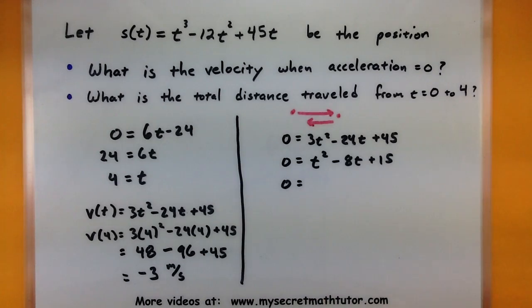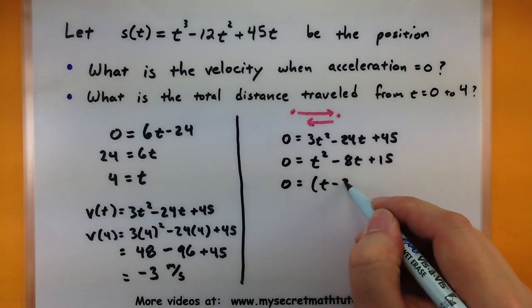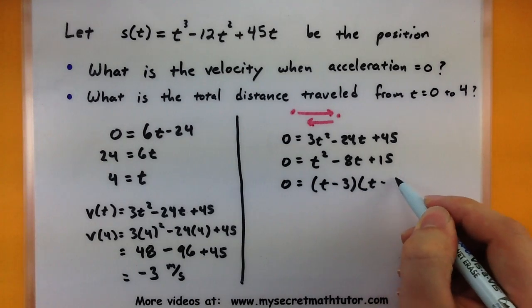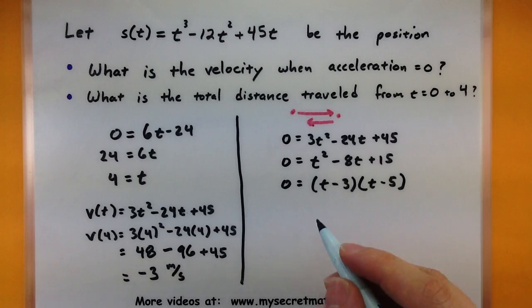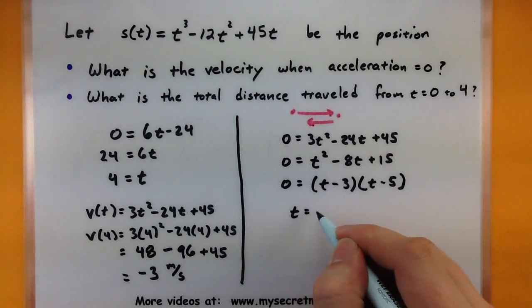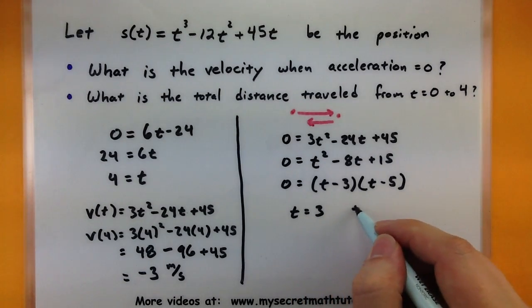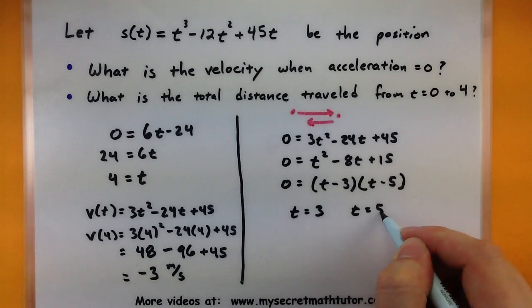Alright, so let's see. Everything in here is divisible by 3, so I can make the numbers just a little bit smaller. t² - 8t + 15. And it looks like this definitely factors. Factors into a (t - 3) and a (t - 5).